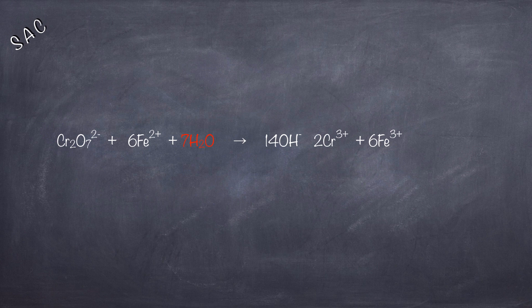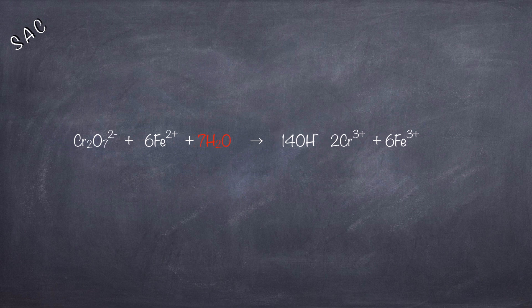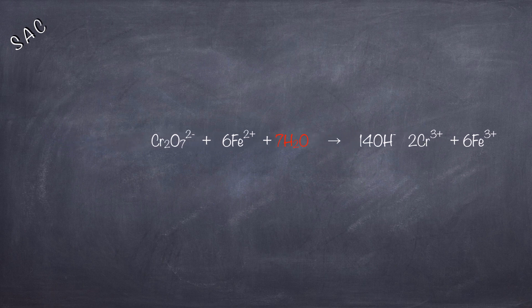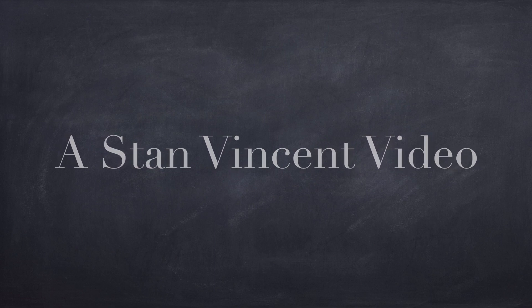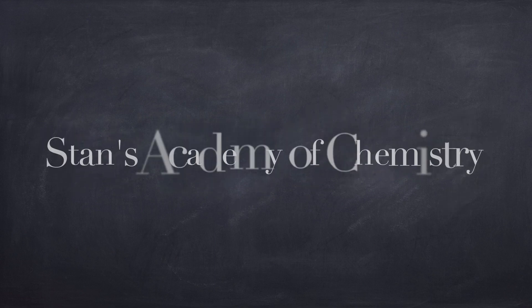If you look at the reactants, there are no hydrogen ions, and if you look at the products, there are no hydrogen ions either — instead we have hydroxide ions. So this is how you change an equation that is balanced in acidic medium to a basic medium. You can apply this method to any equation that has been balanced in acidic medium. If you liked the video, please rate, comment, and subscribe. Thank you and have a great day.